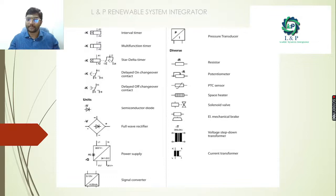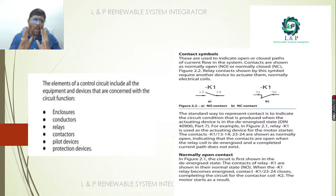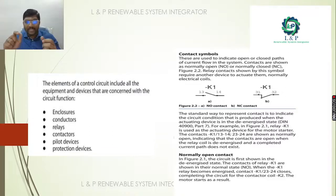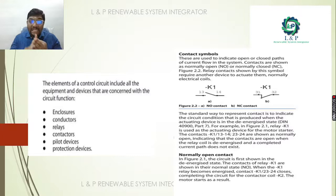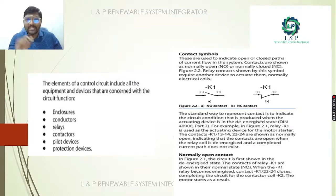The elements of a control circuit are included in all equipment and devices. They are mainly concerned with circuit function, especially the enclosures, conductors, relays, contactors, pilot devices, and protection devices.